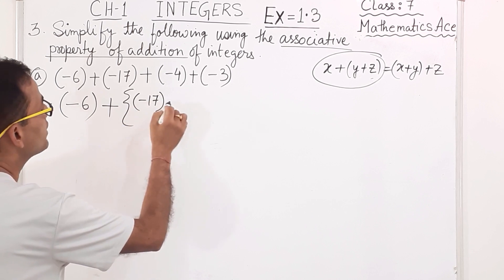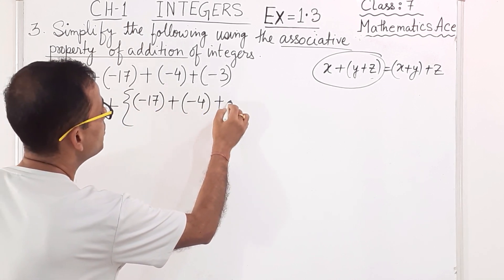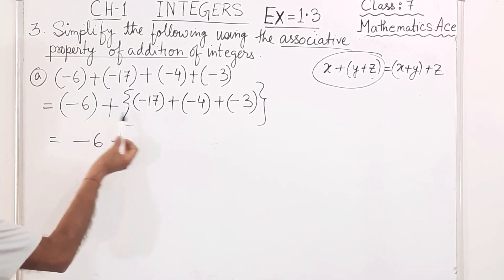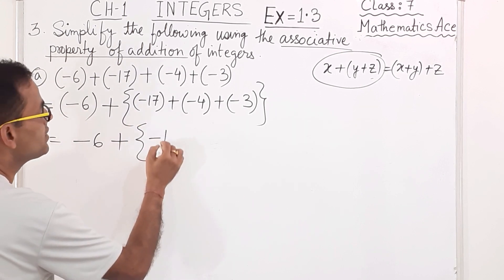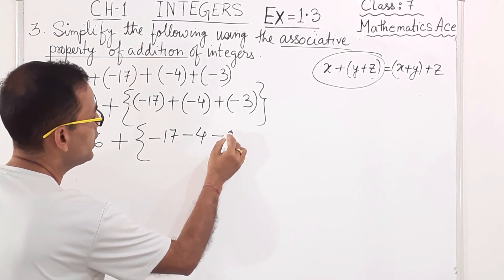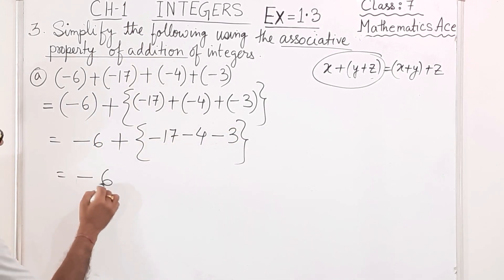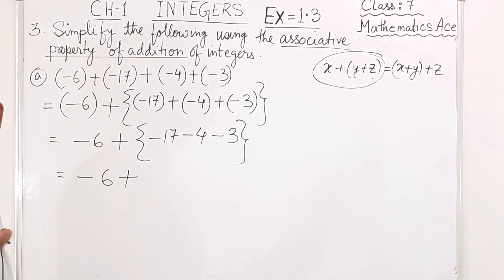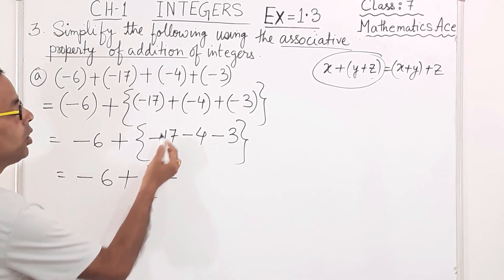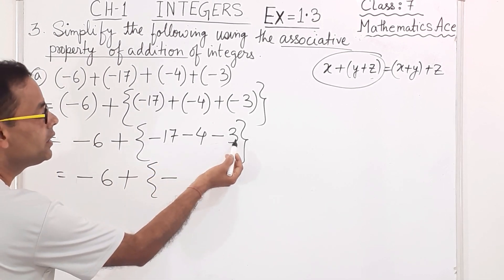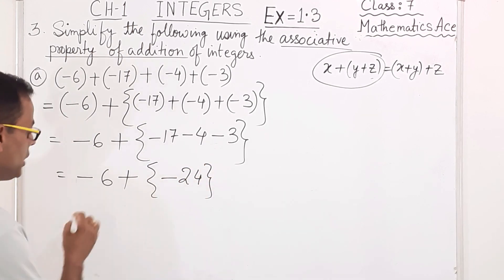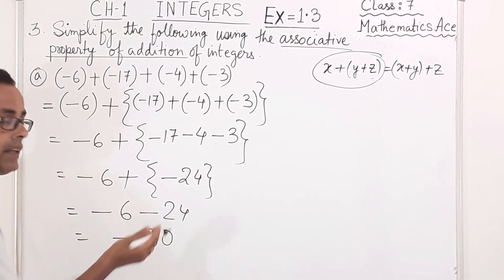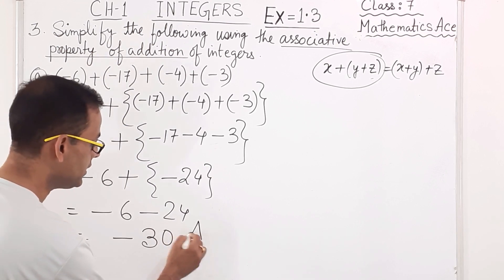For 3a, I write: (-6) + [(-17) + (-4) + (-3)]. Opening the bracket: minus 17, minus 4, minus 3 — all are minus, same sign so we add, giving minus 24. Now: (-6) + (-24). Same sign means we add: minus 30. So the answer is minus 30.